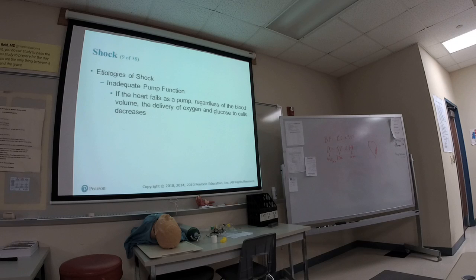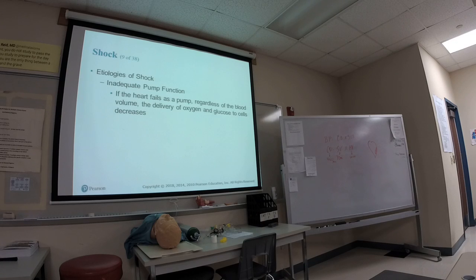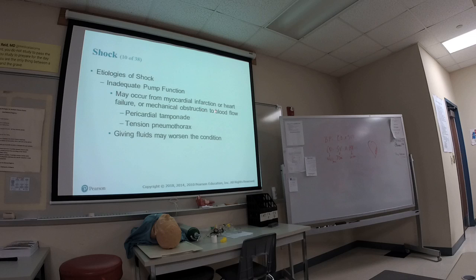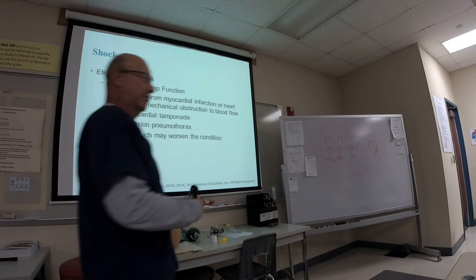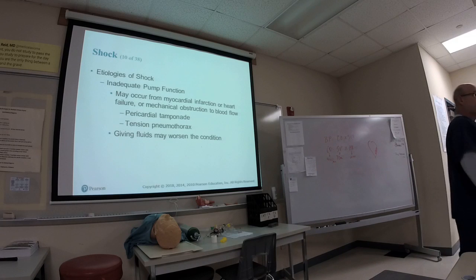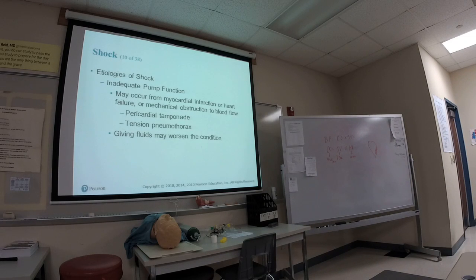In pump failure — cardiogenic shock — the problem is the heart isn't pumping blood to the tissues and cells. The patient has plenty of blood and adequate hemoglobin, but the pump won't move it. This can result from a large MI, CHF, pneumothorax, cardiomyopathy, or tamponade. We'll cover all of those in more detail later.